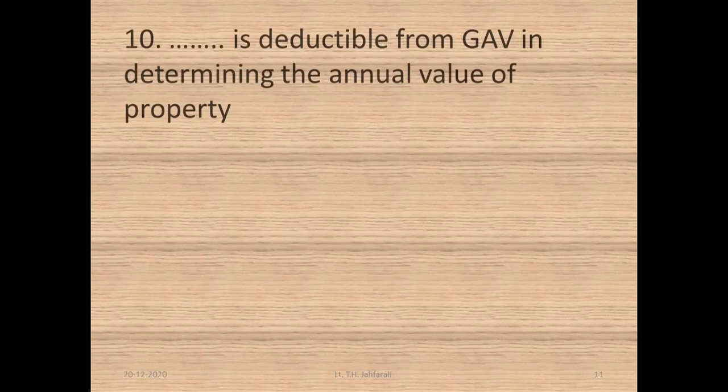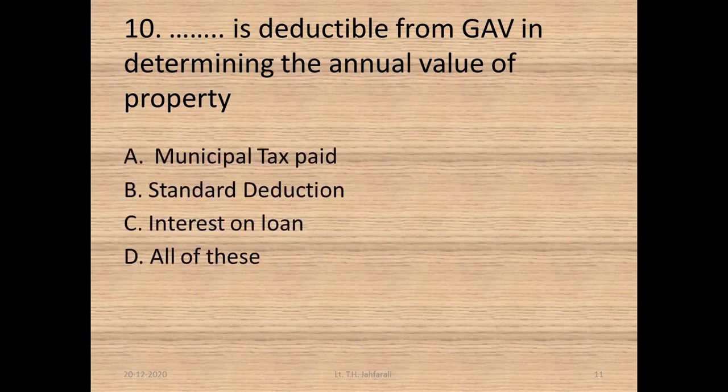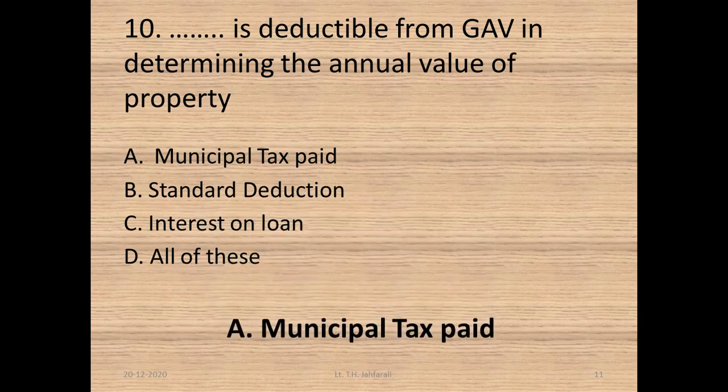Question 10: Dash is deductible from gross annual value in determining the annual value of property — A. Municipal tax paid, B. Standard deduction, C. Interest on loan, D. All of these. Option A: Municipal tax paid.